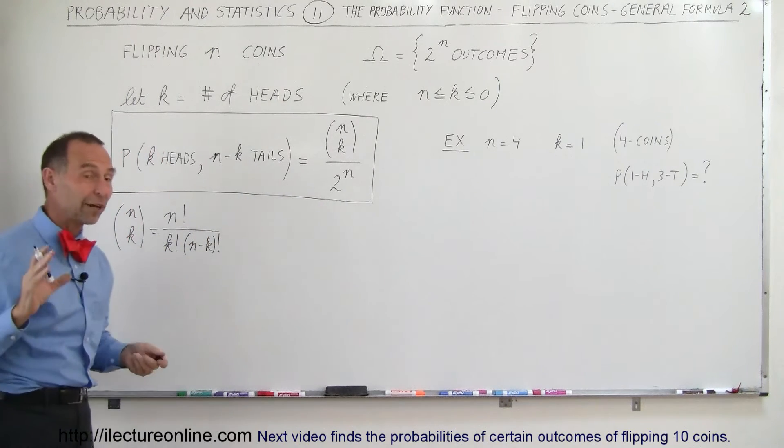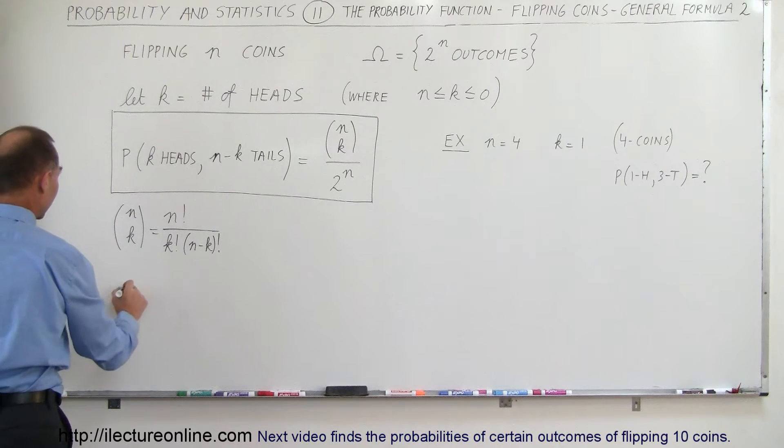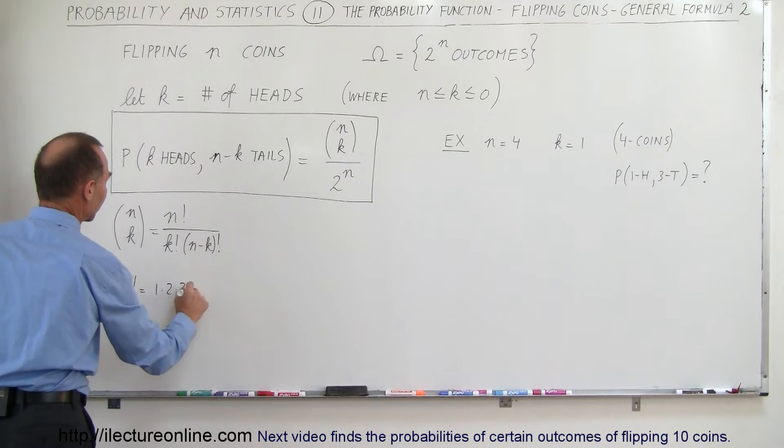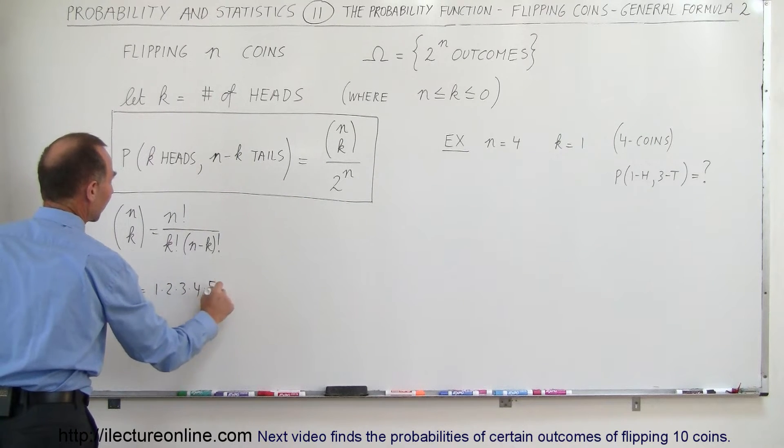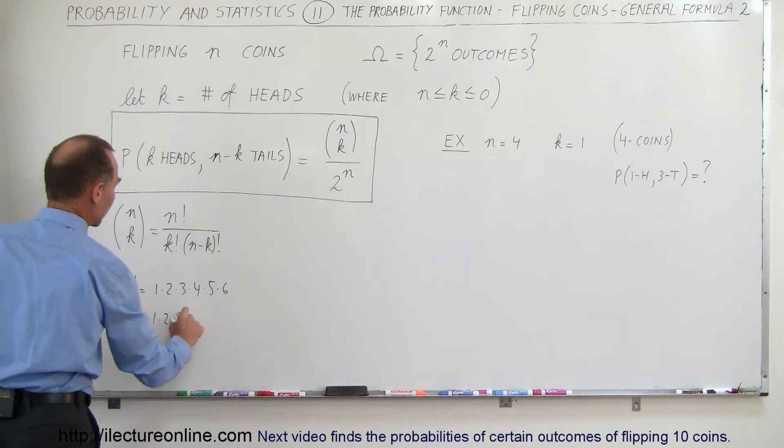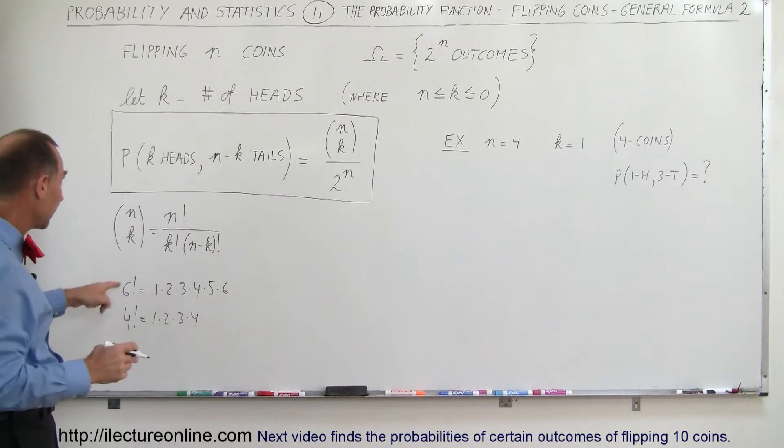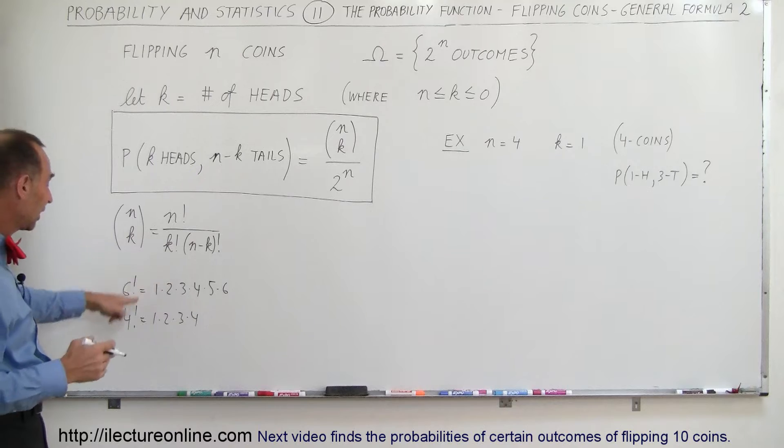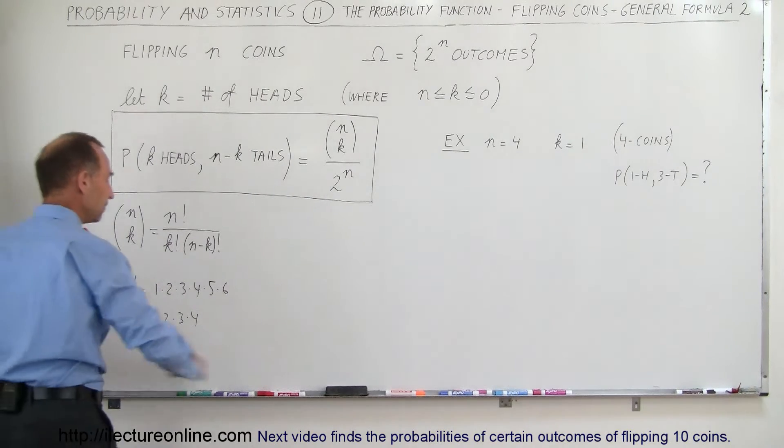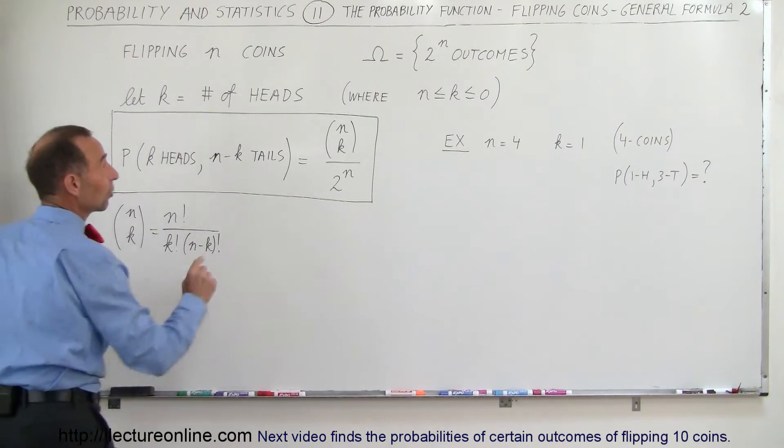For those who have forgot what factorial means, let me just show you. Let's say that we have something like 6 factorial, well that is equal to 1 times 2 times 3 times 4 times 5 times 6. If you have 4 factorial, that's equal to 1 times 2 times 3 times 4 and so forth. It's simply the integers multiplied together all the way up to the number that you have after that exclamation mark. That exclamation mark means factorial.